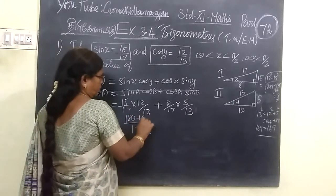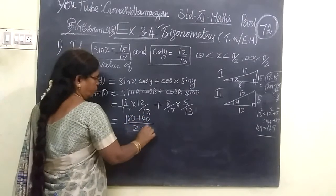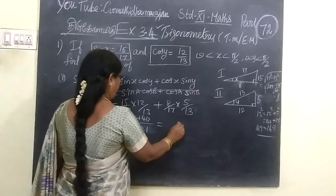So you know, if you add it, you get 180 plus 40, which is 220 by 221.